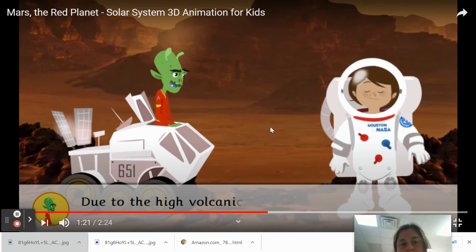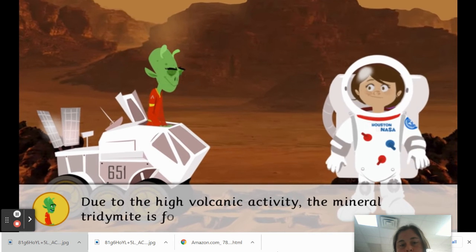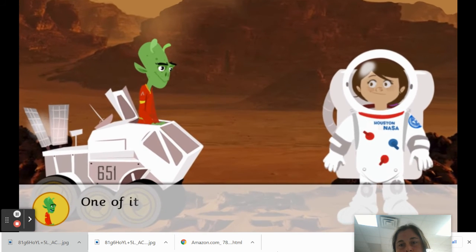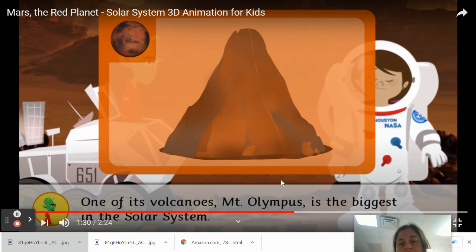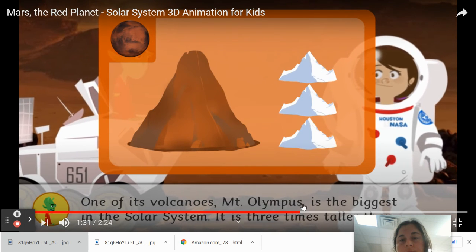Due to the high volcanic activity, the mineral tritamite is foreign. One of its volcanoes, Mount Olympus, is the biggest in the solar system. Do we have volcanoes on Earth? Yes, we do. In the state of Hawaii, that's one of them. It is three times taller than Mount Everest.